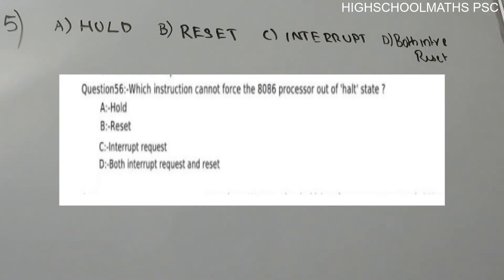Fifth question: which instruction cannot force the 8086 processor out of HALT state? Options: A) HOLD, B) RESET, C) Interrupt request, D) Both interrupt request and reset. Now, the HALT state in the 8086 processor — the instructions that can affect it are HOLD, RESET, and interrupt request.